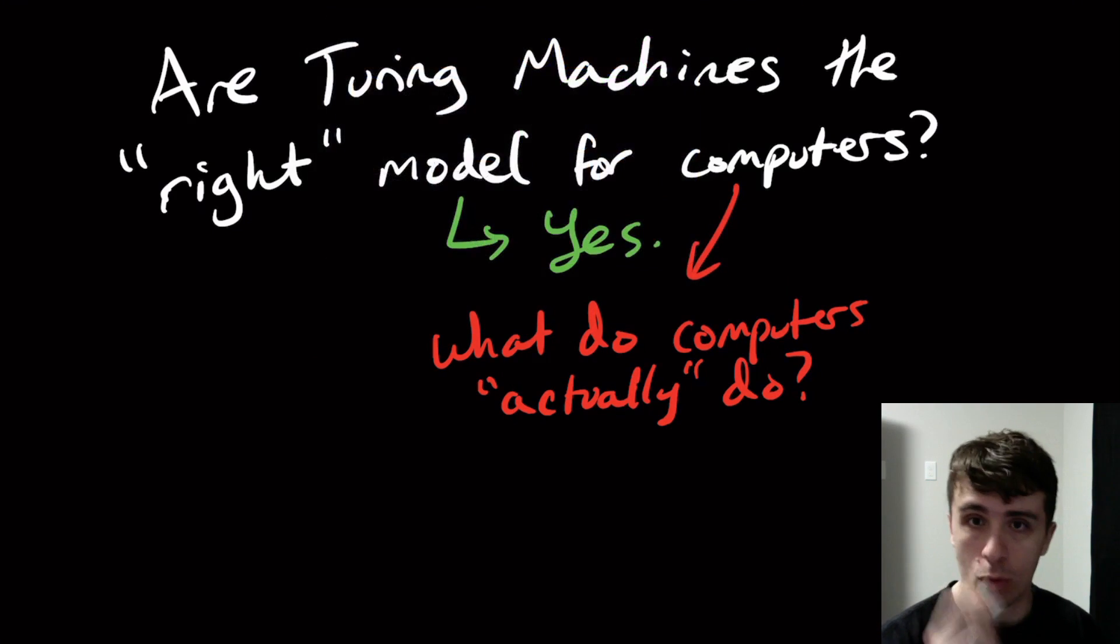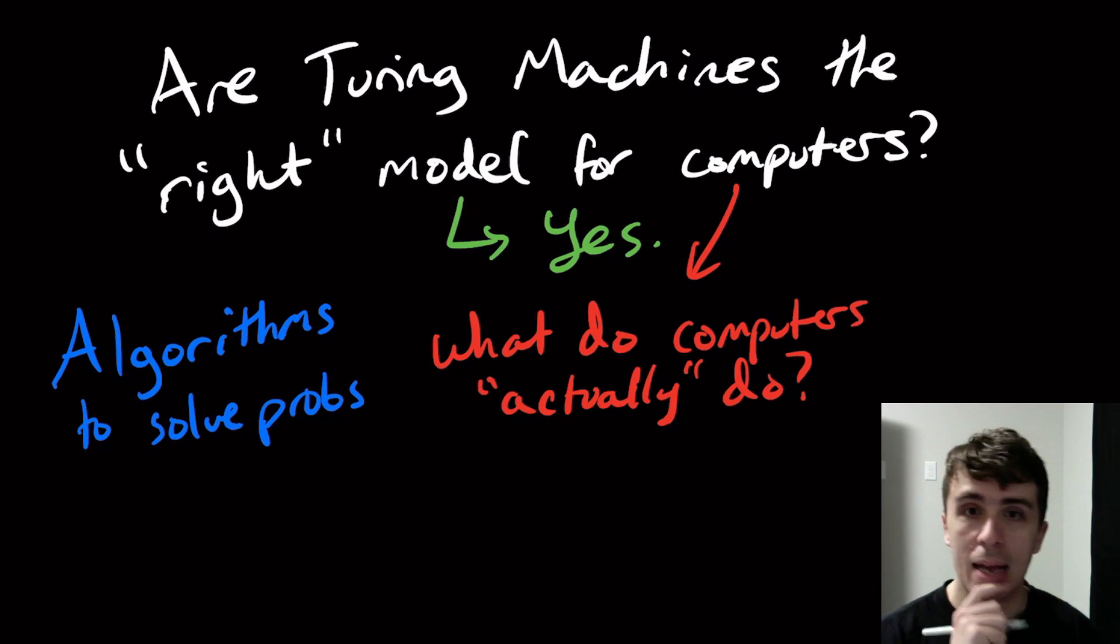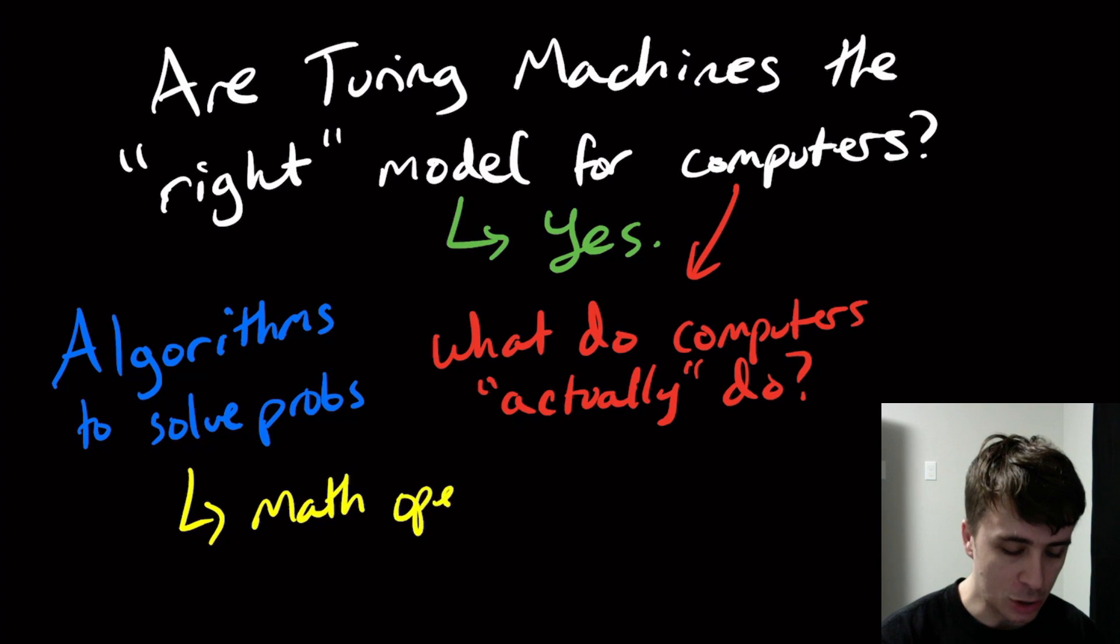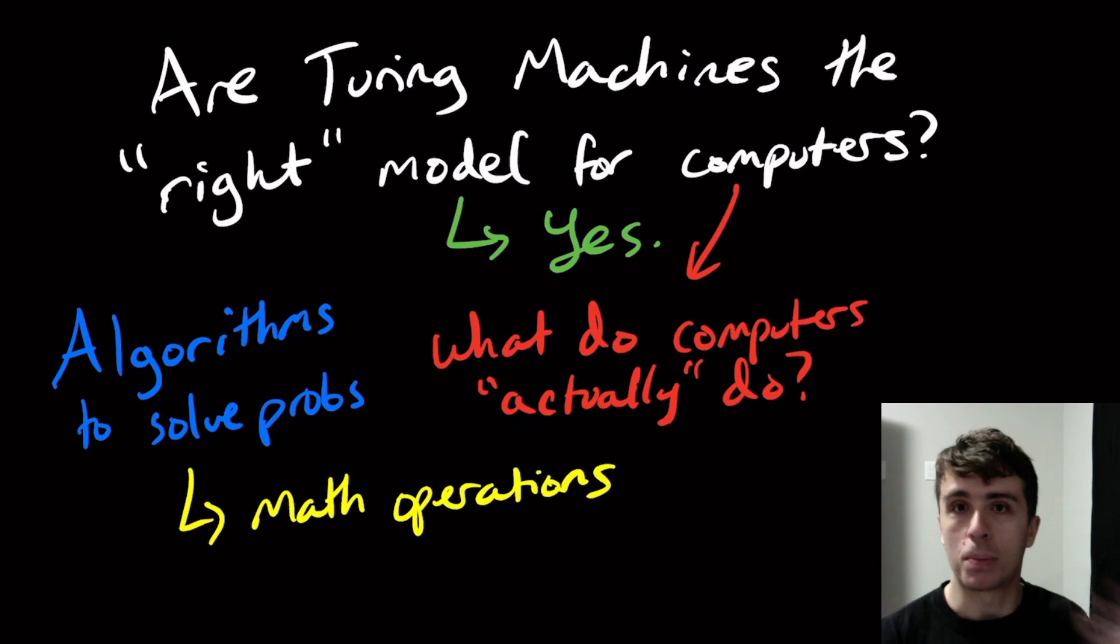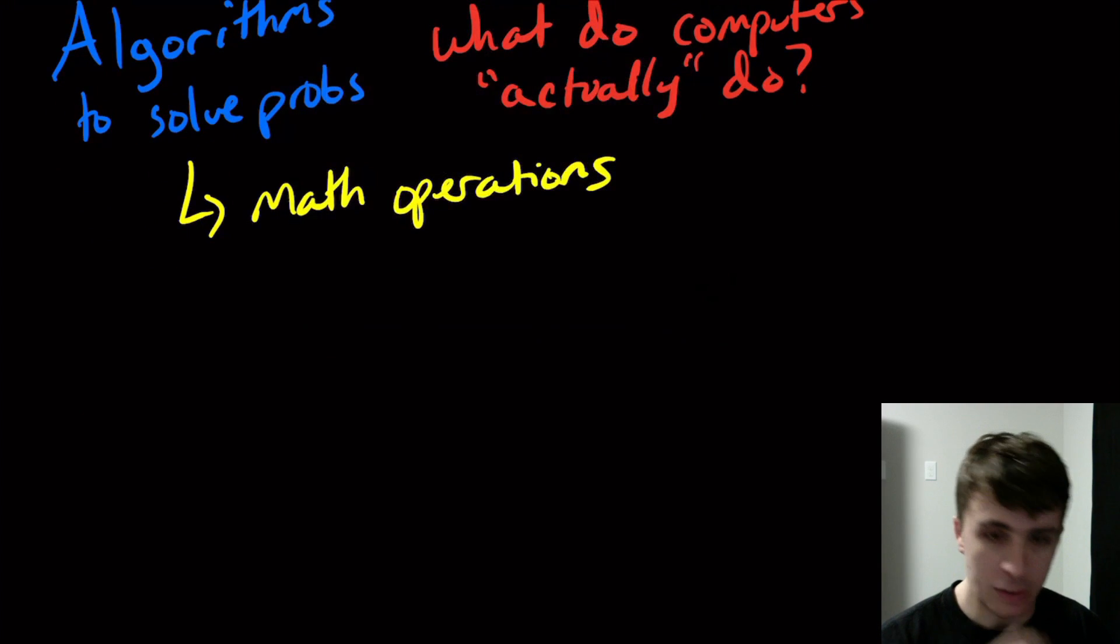Generally what modern computers do is they use algorithms of some kind to solve problems. The thing with algorithms is that they have a bunch of math operations, like multiplying things or adding one for a program counter or storing things somewhere in memory. So the question is, can Turing machines actually do math stuff? And the answer is yes.